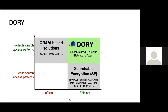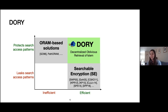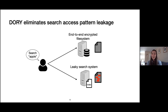An audience member notes that oblivious data structures could be used here without incurring general ORAM overhead. The speaker agrees and clarifies that Dory uses a different class of techniques — specifically, leveraging non-colluding servers — to eliminate search access pattern leakage. Dory is designed to replace leaky search systems that expose word-level information, incurring no leakage beyond when a search takes place, which documents are searched over, and side effects of the search.